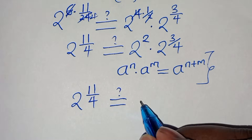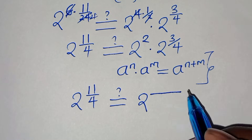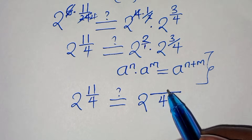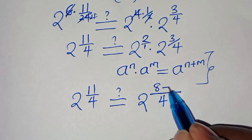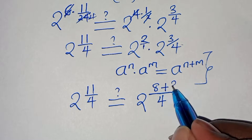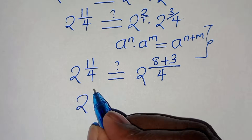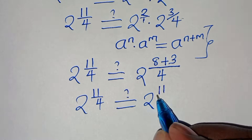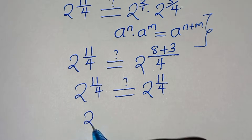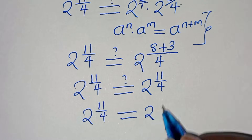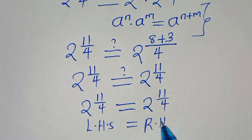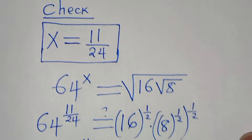So we have 2 to the power of 11 over 4 on both sides. Finding the LCM of 4, the right side exponent is 8 over 4 plus 3 over 4, which equals 11 over 4. Therefore 2 to the power of 11 over 4 equals 2 to the power of 11 over 4. The left-hand side equals the right-hand side, which affirms that x equals 11 over 24 satisfies the equation.